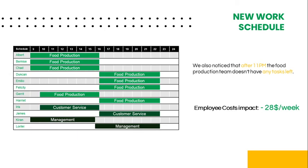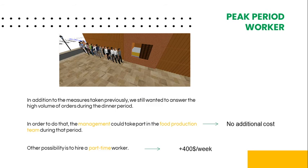Here is our suggestion for the new work schedule. We noticed that after 11pm the food production team doesn't have any tasks left, so we've shortened the number of hours for those workers. The packer relocation and schedule reduction would save $28 a week in employee costs. We still wanted to address the high volume of orders during the dinner period. To do that, management could take part in the food production team during that period, which would require no additional costs. If that isn't possible, a part-time worker should be hired, which would lead to an increase of $400 in employee costs.